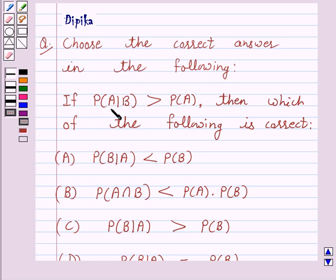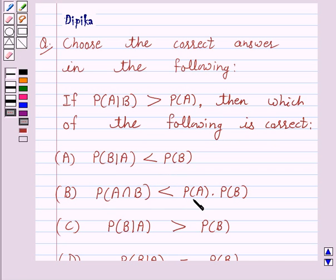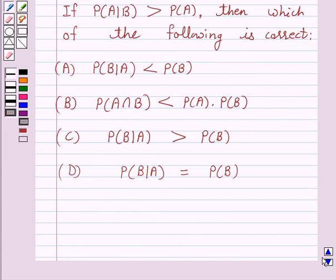If probability of A given B is greater than probability of A, then which of the following is correct? Option: Probability of B given A is less than probability of B. Probability of A intersection B is less than probability of A into probability of B. Probability of B given A is greater than probability of B. Probability of B given A is equal to probability of B.